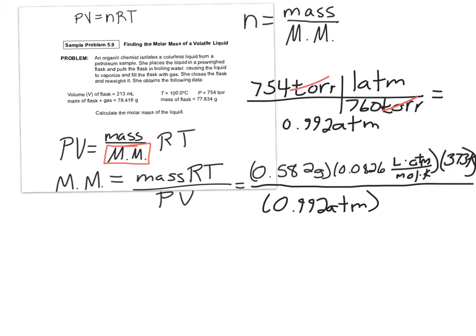And now our volume, they say, is 213 milliliters. Note, again, the units for R have volume in the liters, so I've got to convert that 213 milliliters to liters, and so that's just going to be 0.213 liters.